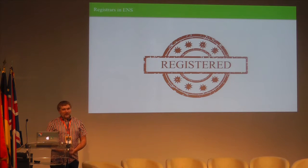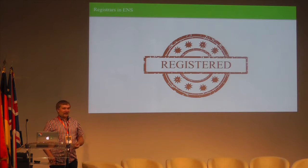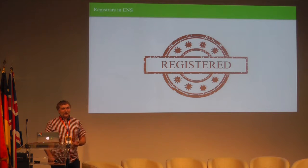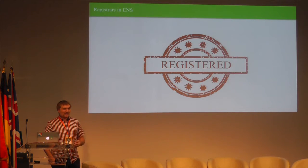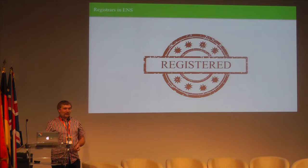The third and final component of ENS is registrars. Registrars are very simply contracts that own names. In principle, you can be a registrar yourself simply by buying a name in ENS and handing out subdomains to your friends. Contract-based registrars simplify this pattern. Typically they define some set of rules — which may be first-come-first-served, limited access, token-based, or an auction — and anyone who follows those rules will have a subdomain assigned to them, which they can then do anything with, including creating their own subdomains and setting up their own registrar.